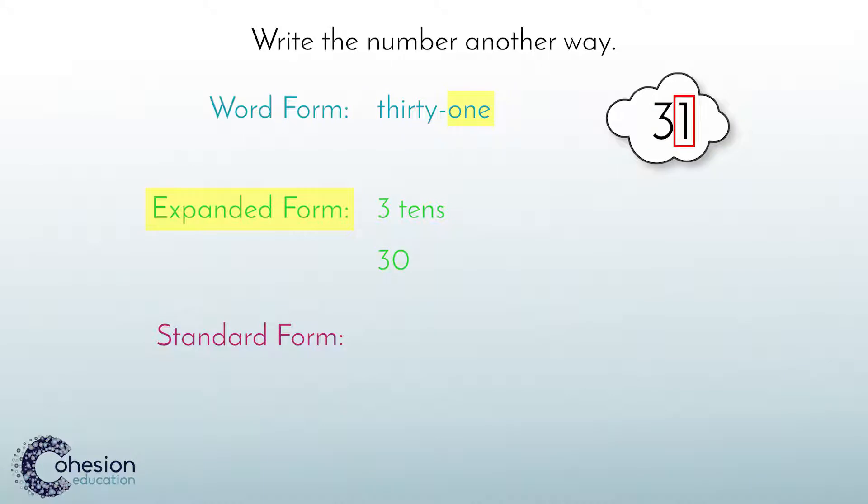The 1 in the number 31 is in the ones place. That means it just represents 1. Students can write 1 one or can just write plus 1. The number 31 in expanded form can be represented as 3 tens and 1 one, or 30 plus 1.